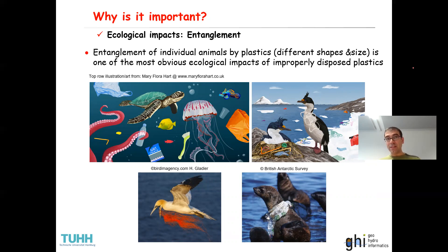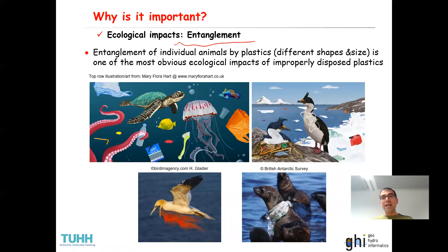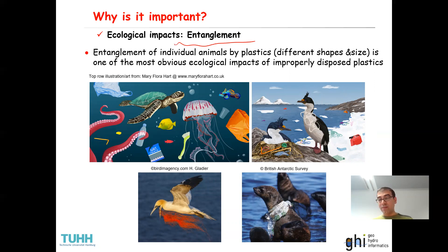The first ecological impact I want to highlight is entanglement. Most of you have already heard about entanglement of individual animals by plastics of different shapes and sizes in different environments — it is one of the most obvious ecological impacts of improperly disposed plastics. There are many disturbing pictures on the internet regarding the entanglement of animals by plastic, which is very sad.